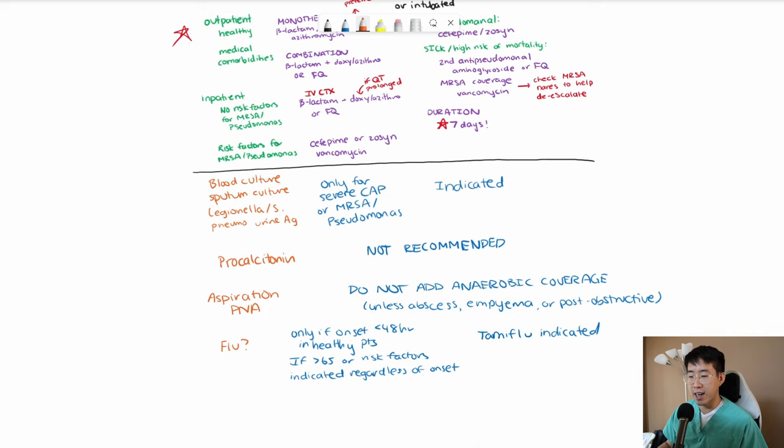Another thing that the 2019 IDSA guidelines looked at was the utility of getting follow-up x-rays to ensure resolution of pneumonia. And basically they had a strong recommendation against getting follow-up x-rays, mainly because even if a patient has improved and their pneumonia has resolved, a lot of times the imaging findings of their pneumonia lag behind their clinical improvement. And so you may get an x-ray in two weeks and they're still going to have signs of pneumonia everywhere, even though the patient is completely back to normal and back to baseline. So there's no indication for follow-up imaging in these patients.